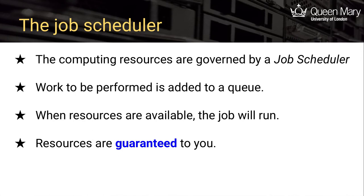Work is also queued fairly. When resources are given to you, they are guaranteed. If you request two cores and 10 gigabytes of RAM, that's not shared with anybody. That's one of the reasons why the job scheduler has to handle the resources, rather than just letting everyone run processes as they please.